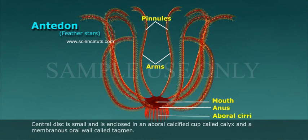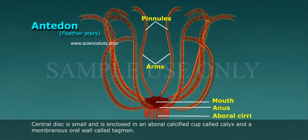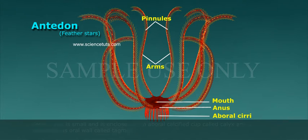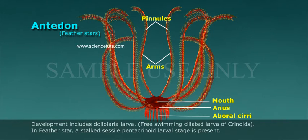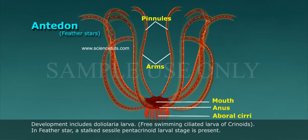The central disc is small and is enclosed in an aboral calcified cup called the calyx and a membranous oral wall called the tegmen. Spines and pedicellariae are absent; tube feet lack suckers. Development includes the doliolaria larva, a free-swimming ciliated larva of crinoids.